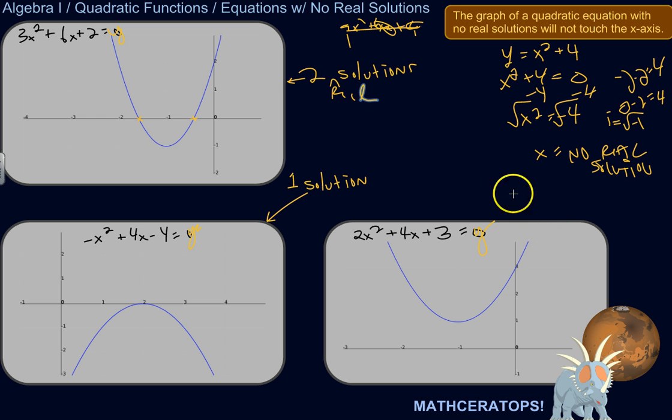Here is another example of a quadratic function where there's no real solution. And you can see it doesn't cross or even touch the x-axis. So there's no values of x, no real values of x, for which y is equal to 0. It just doesn't go down here.